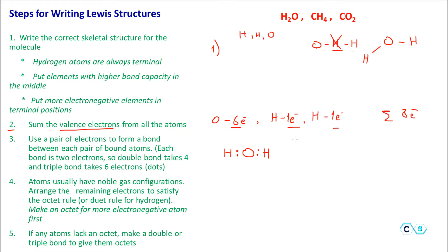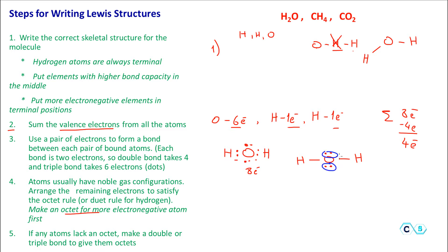We connect both hydrogens to oxygen, using two electrons per bond — four electrons used total. We had eight and used four, so four electrons remain. These are placed around the more electronegative atom as two lone pairs on the oxygen, giving it an octet. This is the correct Lewis structure for water. Bonds can also be represented with lines. The electrons not making bonds are called non-bonding electrons or lone pairs, while those forming bonds are called bonding electrons.